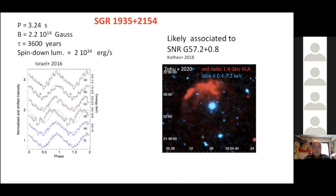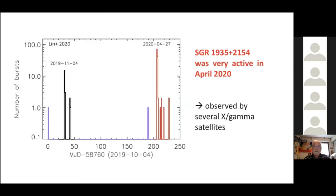This magnetar became active, very active actually, in April this year. What is plotted here is the number of bursts per day as a function of time. And you see that starting in April, the rate of bursts from this object started to increase very significantly. And so for this reason, many X-ray and gamma ray satellites started to observe this object. Because indeed the magnetars are very interesting to observe when they are active and emitting bursts.